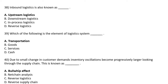Due to small changes in customer demands, inventory oscillations become progressively larger looking through the supply chain. This is known as — Option A: Bullwhip Effect, Option B: Net Gen Analysis, Option C: Reverse Logistic, Option D: Reverse Supply Chain. The correct answer is Option A: Bullwhip Effect.